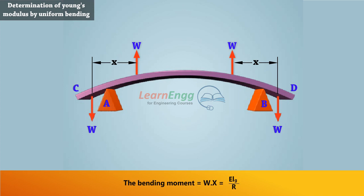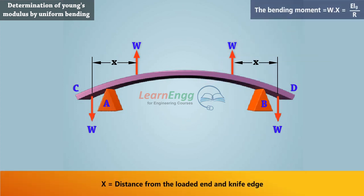The bending moment equals W times X equals EI by R, where X equals distance from the loaded end and knife edge.